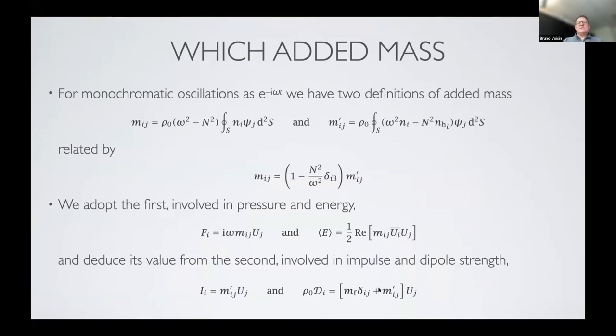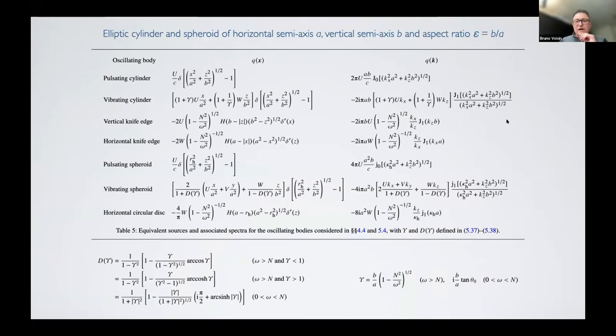We will consider the definition of added mass which plays a role in the hydrodynamic force on the moving body and in the energy of the fluid, because these are the two quantities of practical interest. But we will use the other definition to determine the added mass. So how do we do this? Using a paper I published last year in GFM, I used the boundary integral method to calculate the representation of a moving elliptic cylinder or spheroid oscillating in a stratified fluid. By taking the representation of these oscillating bodies as sources of mass, and more precisely the spectrum of these equivalent sources, by expanding the spectrum at small wave number, we get immediately the dipole strength and from it the added mass components of the oscillating bodies.